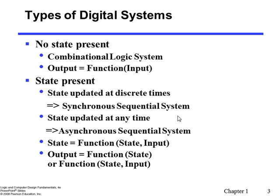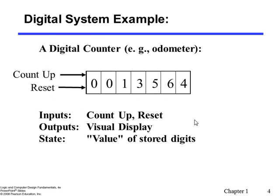Within sequential systems, we have two kinds. The first is called the synchronous sequential system, and the other is called the asynchronous sequential system. The difference is that in synchronous systems the state is updated at discrete times, while in asynchronous systems states can be updated at any time.